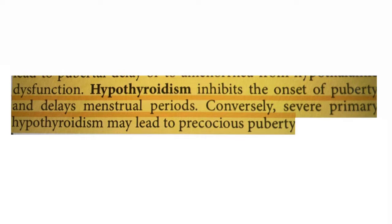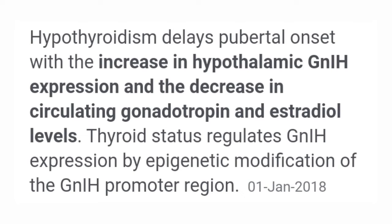Both of these things — how they are happening — I will explain today. First is hypothyroidism leading to delayed puberty. Hypothyroidism delays pubertal onset with an increase in hypothalamic GNIH, that is gonadotropin inhibiting hormone expression, and decrease in circulating gonadotropins.